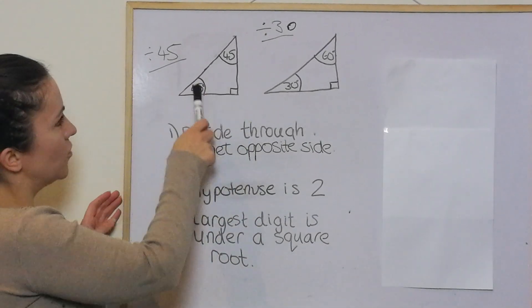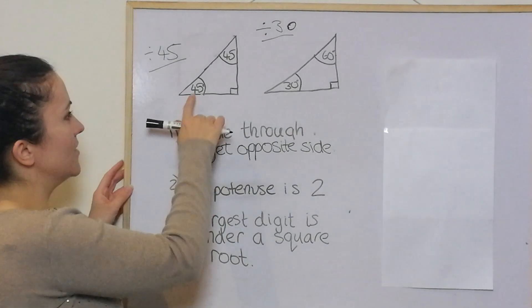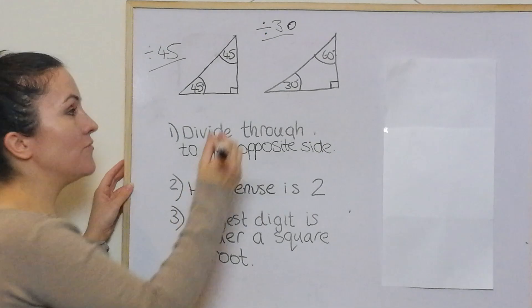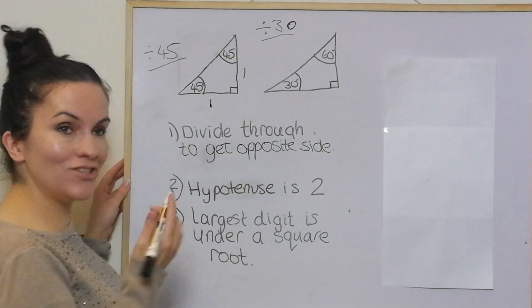If you've got a 45 triangle like that, just divide through by 45 to get the opposite side. So if you divide 45 by 45, you get 1. The same goes for this one. 90 divided by 45 is 2.